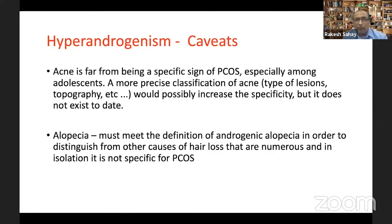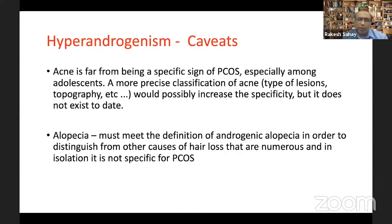Acne is far from a specific sign of PCOS, especially among adolescents, where a more precise classification based on type of lesions and topography would probably increase specificity — but such a classification system doesn't exist. Similarly, alopecia should meet the diagnostic definition of androgenic alopecia to distinguish it from the numerous other causes of hair loss.